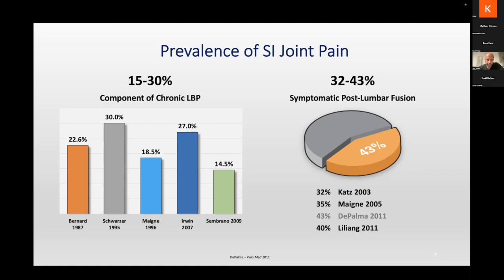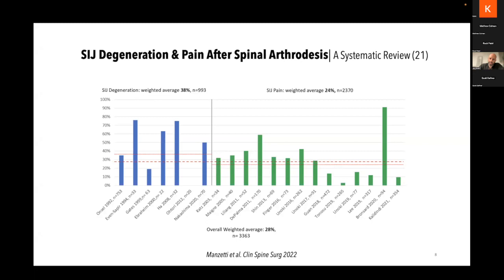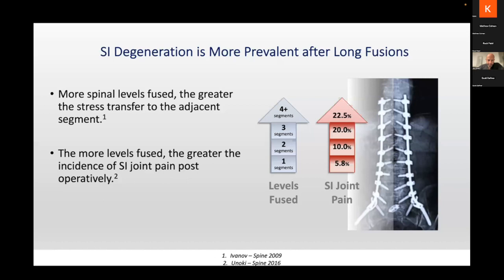A meta-analysis published last year looked at all common spinal fusions and found that the incidence of radiographic SI joint degeneration is almost 40%. Not only that, but about 24% — one out of four post-spinal fusion patients — have actual SI joint pain. Furthermore, the more fused segments, the higher the incidence of SI joint degeneration and pain. Typically, L1 to S1 fusions that did well initially come back seven to ten years later with horrible-looking SI joints that respond to injections and treatment.